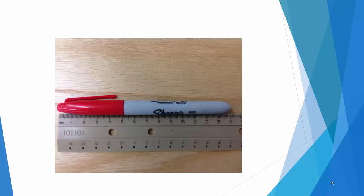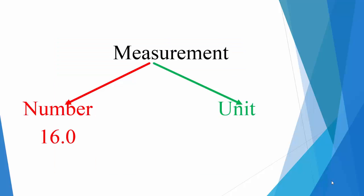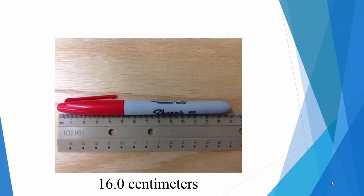For example, how long is the Sharpie? It's up against a ruler that measures in millimeters. We can see that it's 16 long, but 16 what? Well, it turns out that here it's centimeters. So we would say that this has a measurement of 16.0 centimeters.